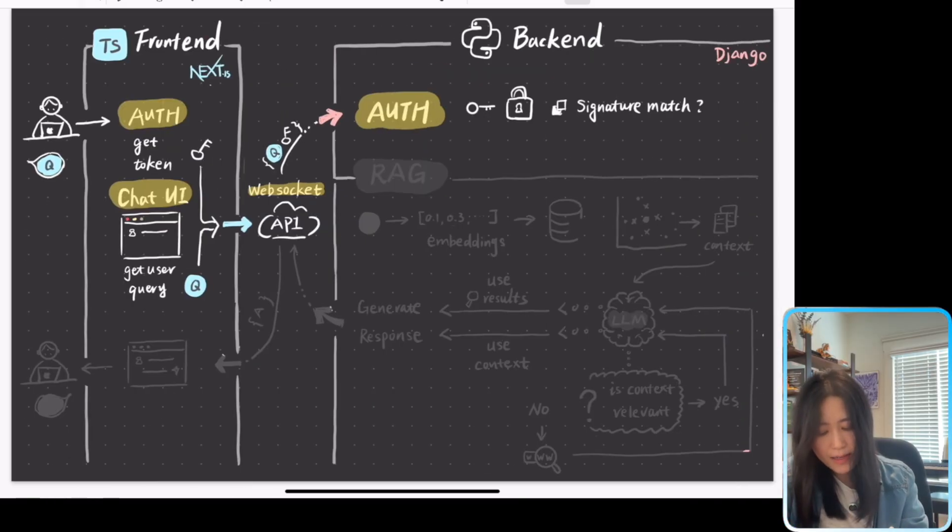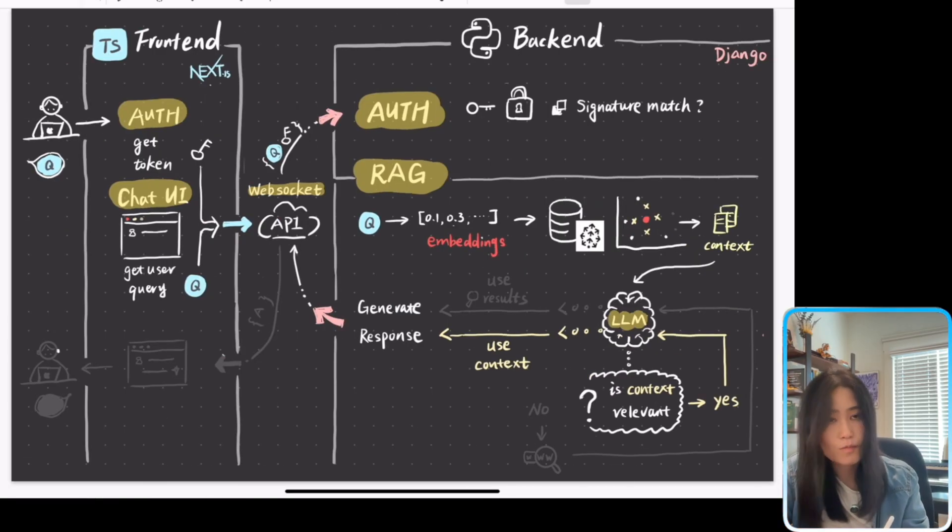Once the backend receives the user token, it's going to try to check, is the signature actually matched? If matched, then we authenticate the user. Only when we authenticate the user will we go to the next module, the RAG retrieval augmented generation process.